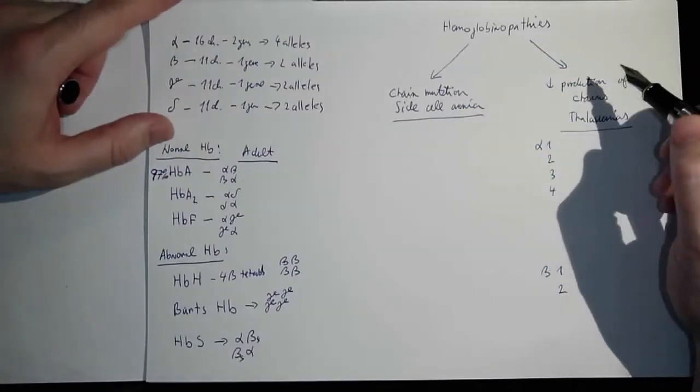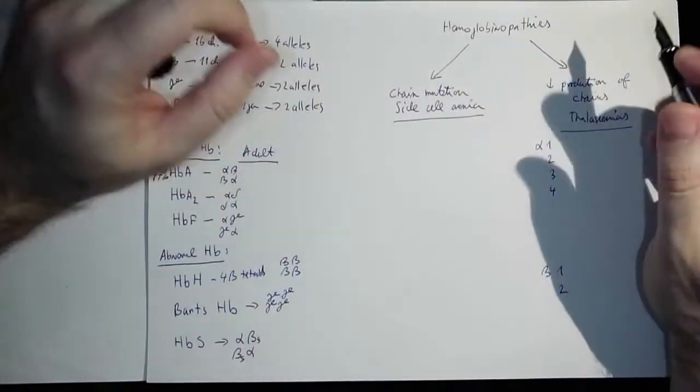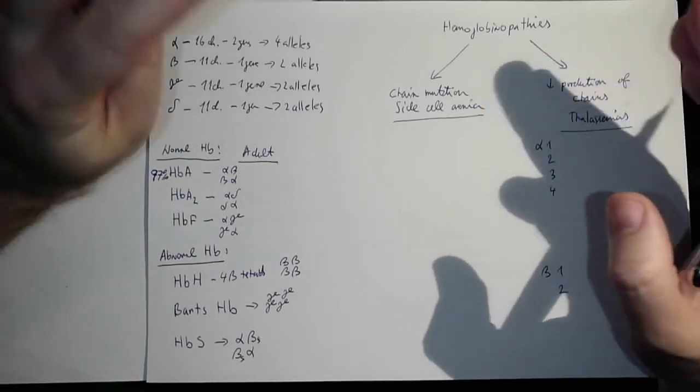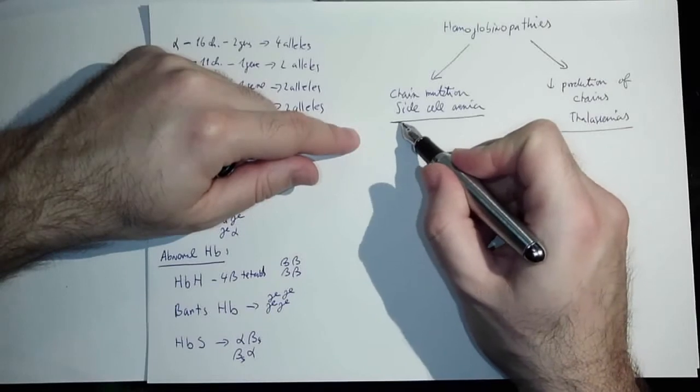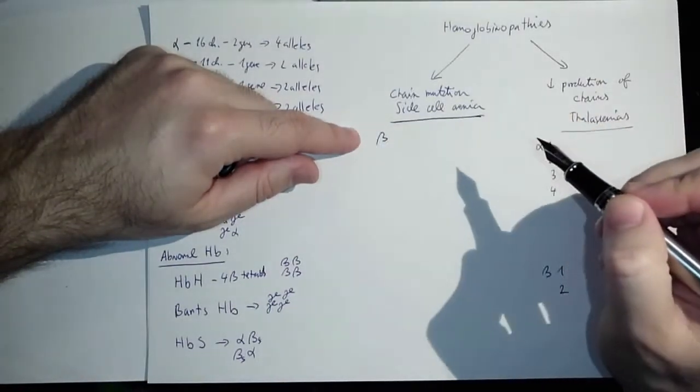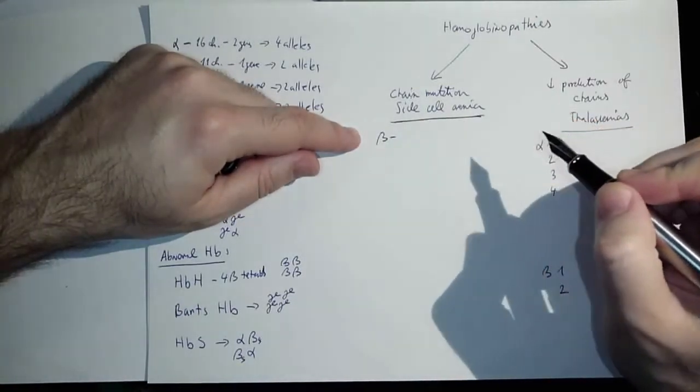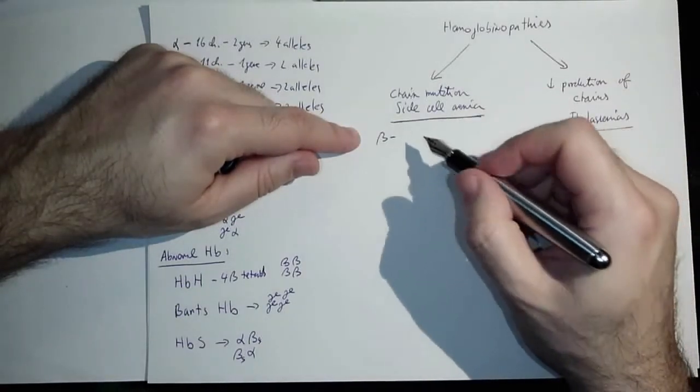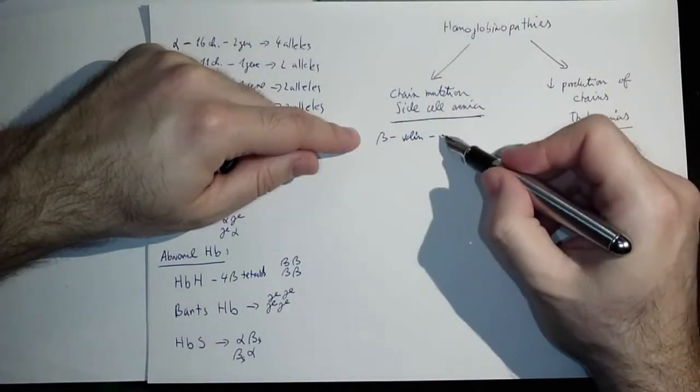This is just a reminder. Now let's get to the hemoglobinopathies. Basically, we can look at two major groups. One group is a mutation in either alpha or beta chain. In this case, we talk about the beta chain mutation, and this is exactly sickle cell anemia. The beta chain is mutated, and actually there is only one exchange: instead of valine, there is glutamic acid.